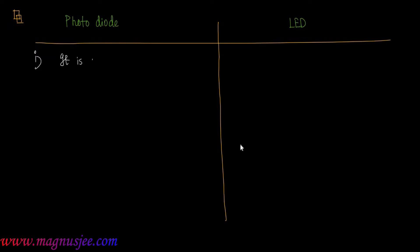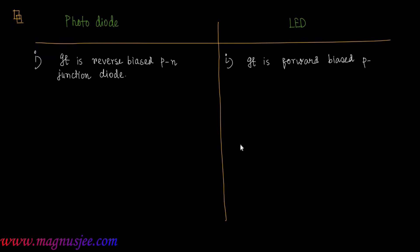Difference number one: photodiode is a reverse biased p-n junction diode, while LED is a forward biased p-n junction diode.